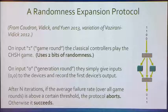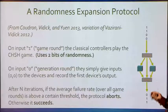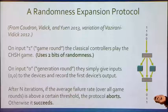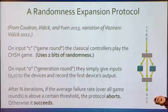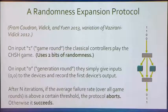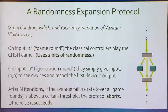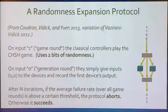In all the randomness expansion protocols I've seen, there's always a final step where we decide whether the device has performed up to standard. We check whether the failure rate was low enough — something like one-half minus root-2 over 4 plus C. As long as it's below that level, we say the protocol succeeded and we've generated random numbers. If it's above that level, we abort and give no output.